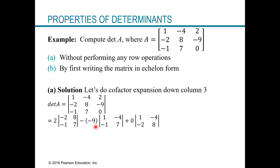By choosing column three, remember how this works — you cover up the row and column of the coefficient. The signs alternate: plus, minus, plus, minus across the matrix. So for the coefficient two in column three, the sign is positive, giving us a positive two out front. Then I cover up the row and column of two, and what's left is a two by two matrix. Similarly for negative nine, the sign is negative, so I have a minus sign, and covering up its row and column leaves us with the entries one, negative four in row one and negative one, seven in row two as the resulting two by two.